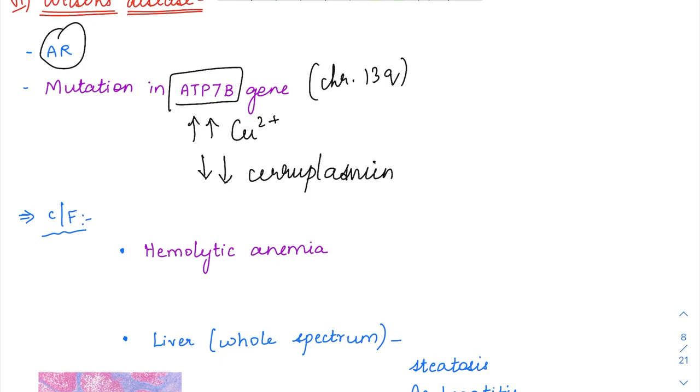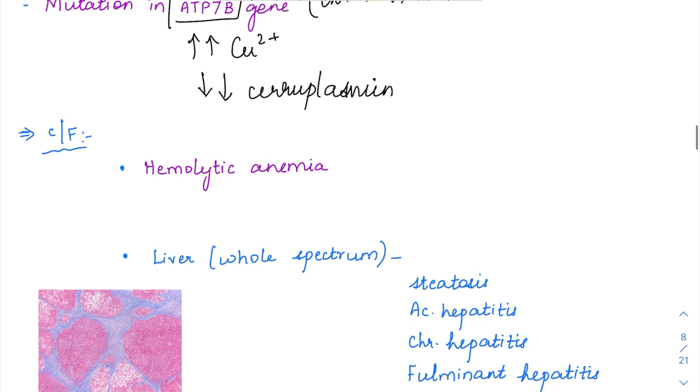This increased copper accumulating in the liver will eventually overflow, or when accumulation causes necrosis of the hepatocytes, it will spill over into the blood. Once it enters the blood, it deposits in various organs and causes diseases.